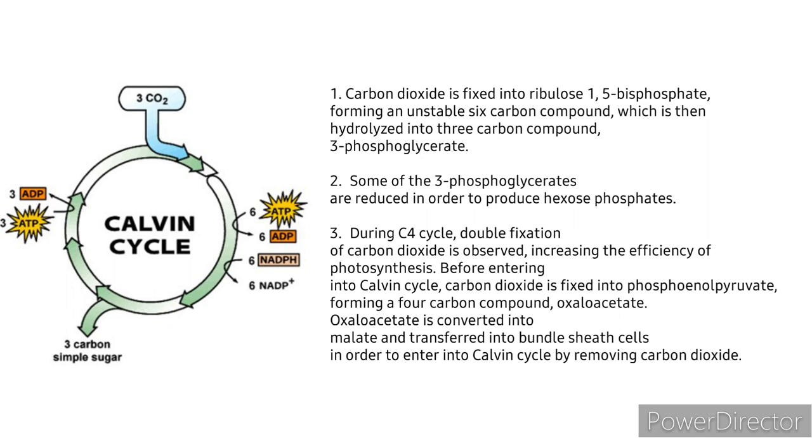Due to the catalytic imperfection of rubisco, photorespiration occurs in the presence of low carbon dioxide concentrations. During the second step, some of the 3-phosphoglycerates are reduced in order to produce hexosephosphates.